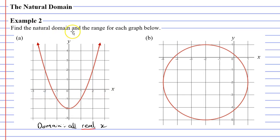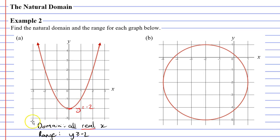We also need to write down what the range is for this graph. For the range, we're looking at the vertical axis — the y-axis — and we're wondering for which numbers the graph exists. You might notice that the graph seems to stop where y equals negative 2. It doesn't go below this point, but it goes forever above that point. So for our range, we'll state that the graph exists for all y values greater than or equal to negative 2. It's important we use the greater than or equal to sign because the graph also exists when y equals negative 2 exactly.